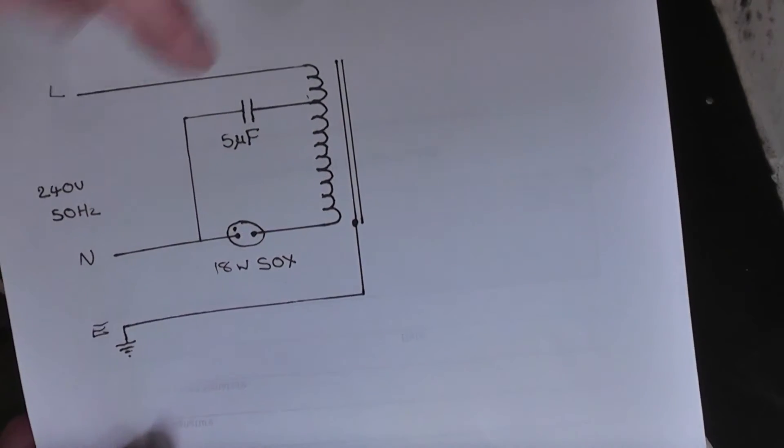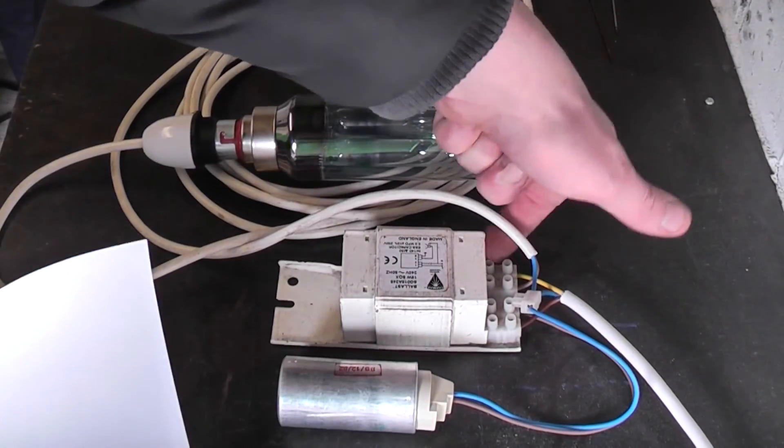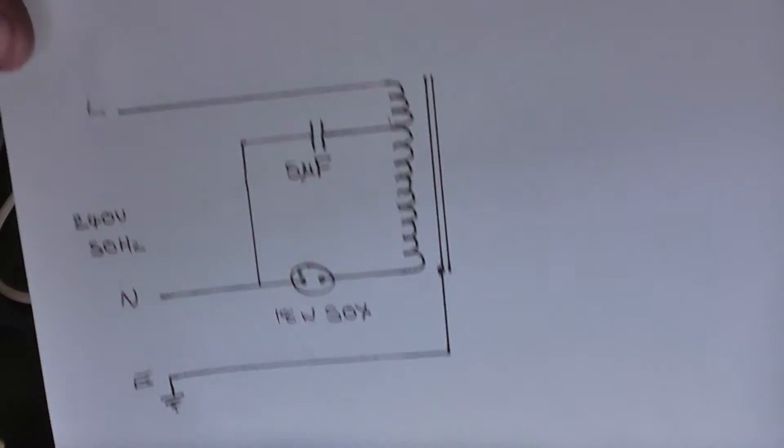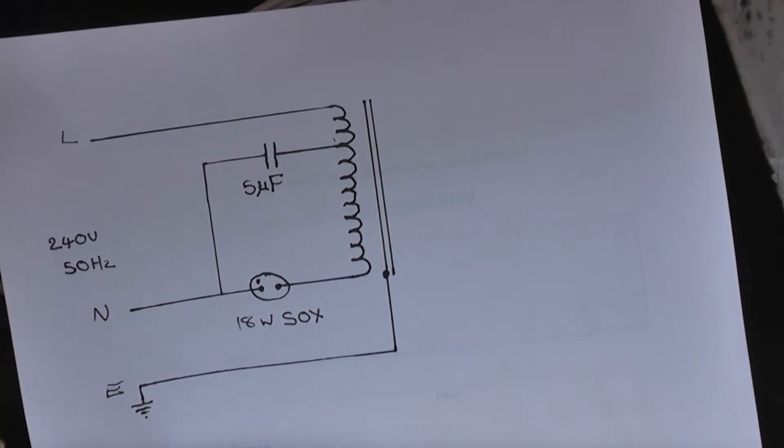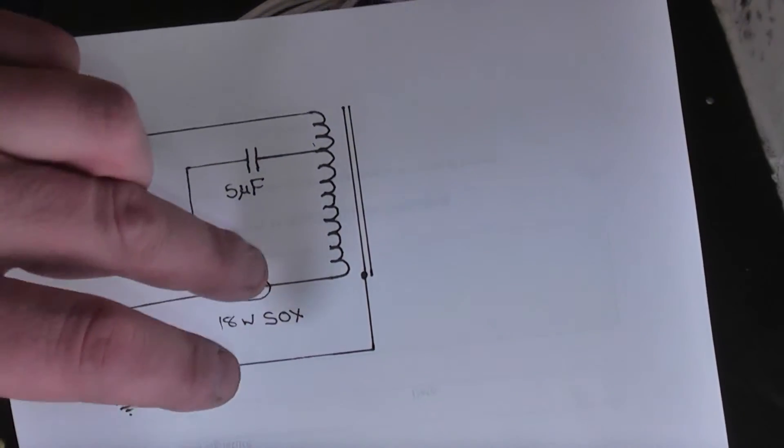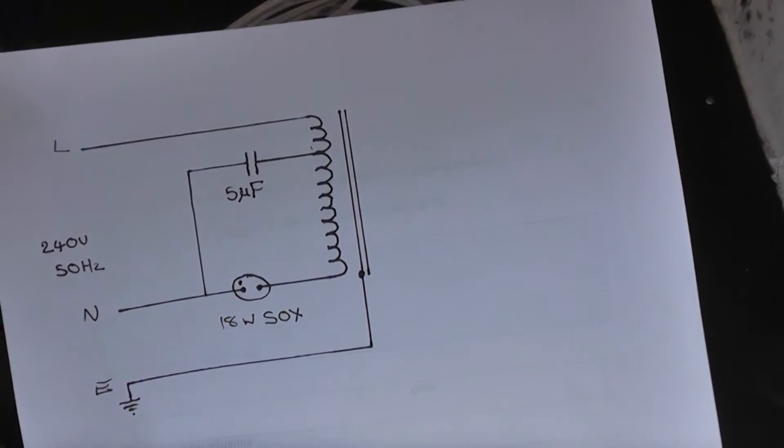There's the lamp, you've got your live coming in across there, neutral earth which is connected to the ballast casing. When the lamps first switched on, the lamp is physically connected to the ballast but electrically it's not until the gas ionises.